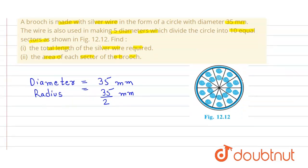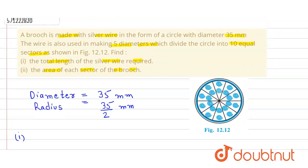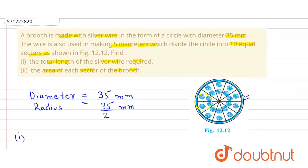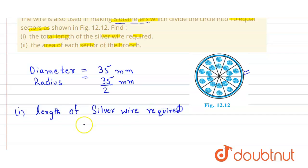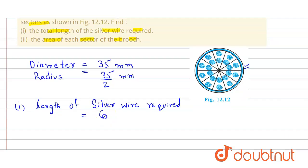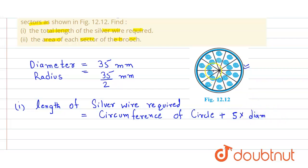In the first part, we have to find the total length of the silver wire, which equals the circumference of the circle plus 5 times the diameter, since there are 5 diameters. So the length of silver wire required equals the circumference of the circle plus 5 into diameter, because there are 5 diameters which divide this into 10 equal parts.